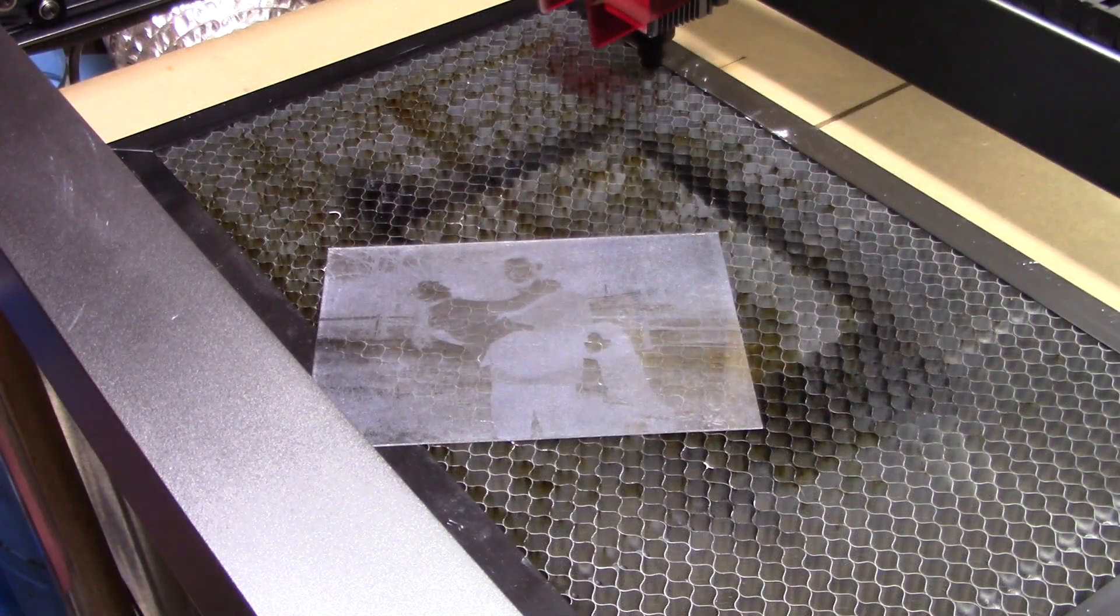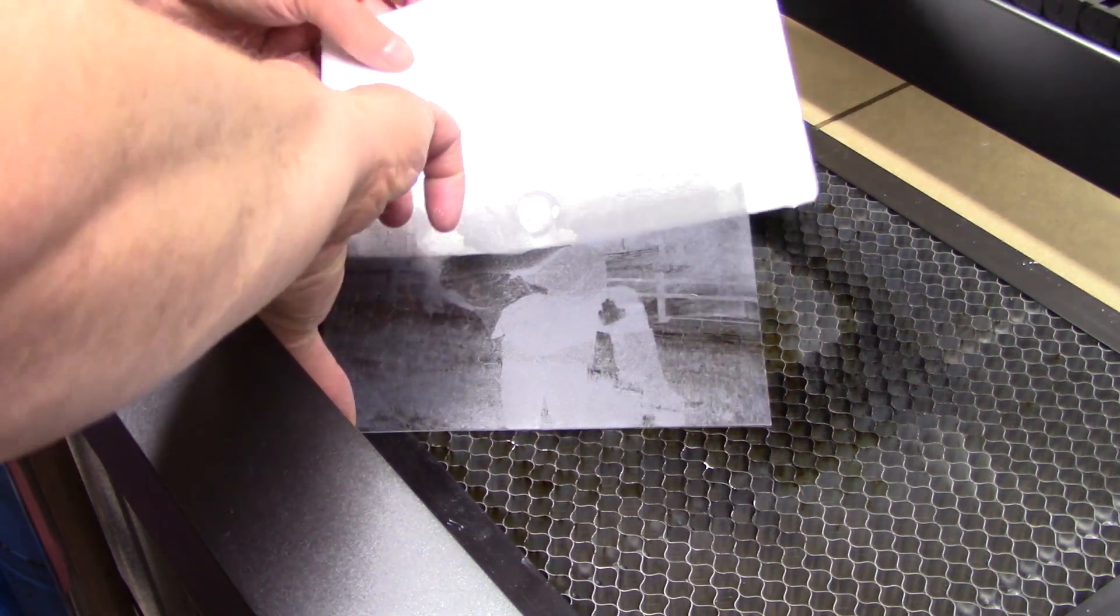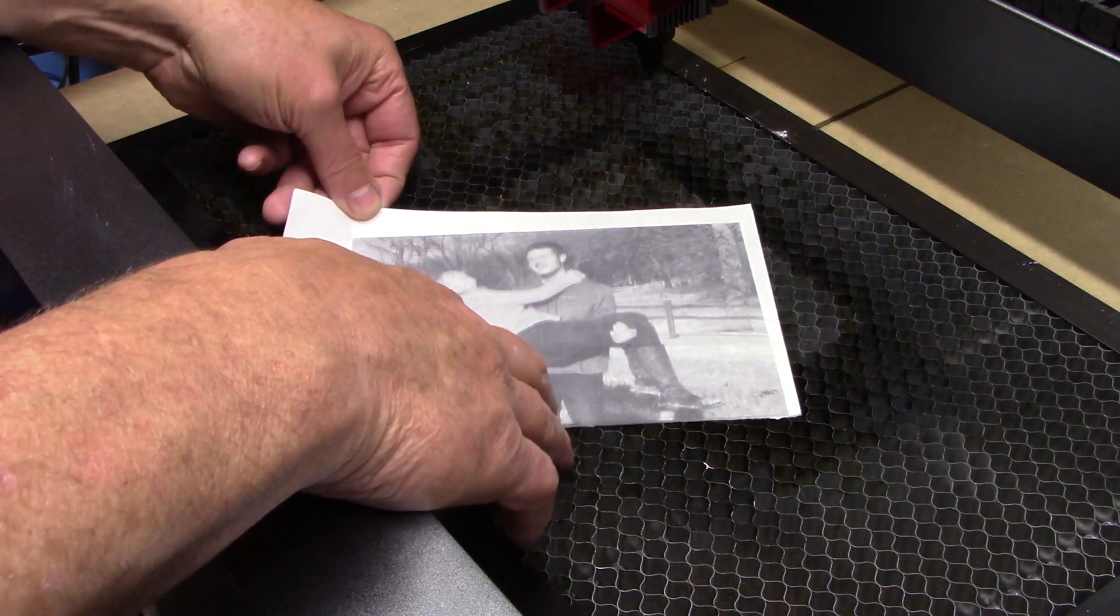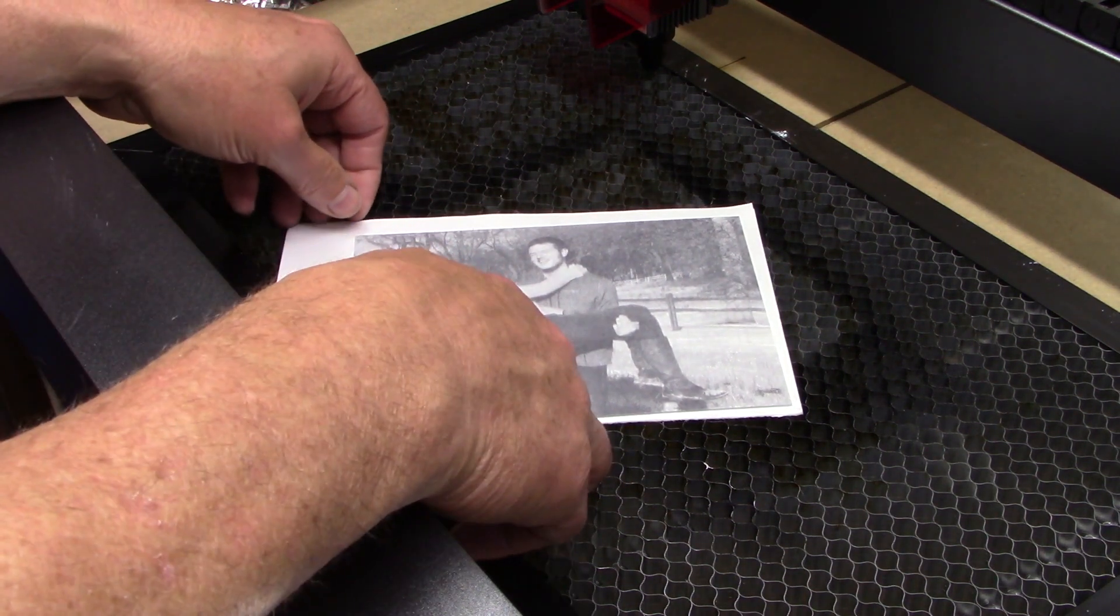Here we have the titanium dioxide cleaned off. It looks almost like a negative. So if I take a piece of white paper and slip it behind the image, it looks like a photograph, which is pretty cool.